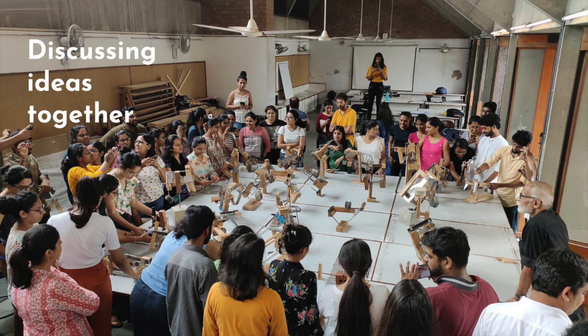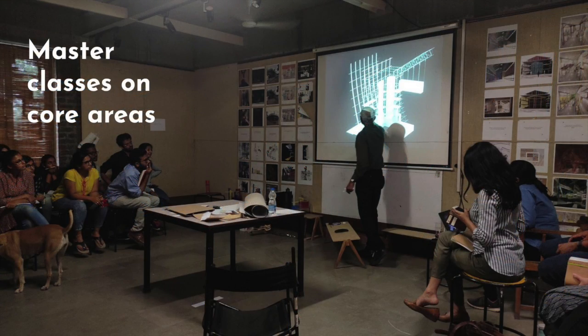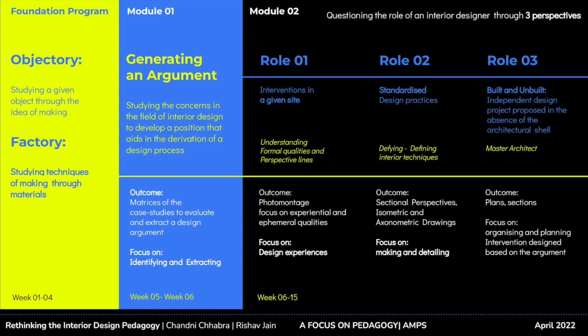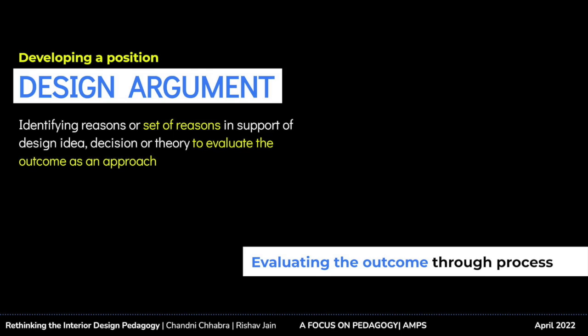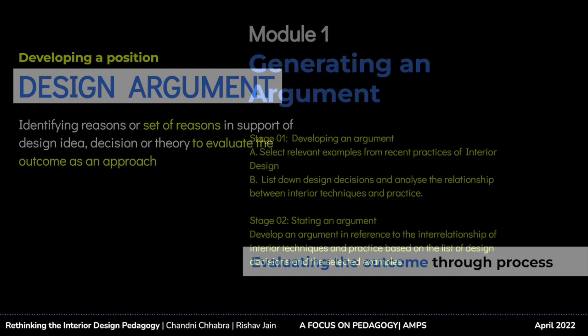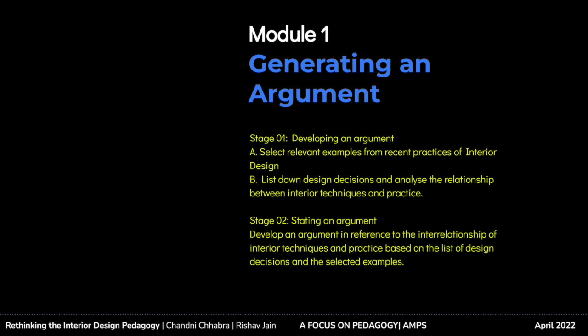A typical studio unit consists of one single project carried out throughout the semester. For this studio, the first four weeks were part of the common foundation program, with students from all streams — furniture, interior design, and building product systems — working together to develop common foundation skills. This is divided over two exercises: 'objectory,' the object drawing, and 'factory,' the making of an object. The next part of the studio is largely divided into two modules. The first module builds an argument for interior techniques based on existing projects, and the second module develops a systematic approach to applying this argument in three different contexts.